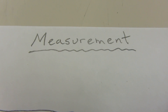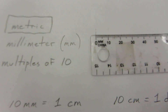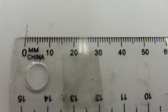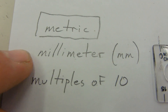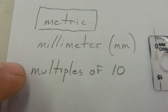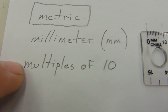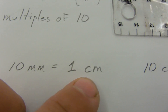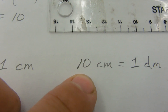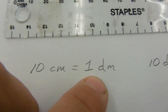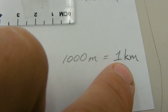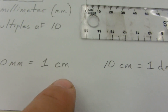This video is on measurement. I'm going to start with metric measurement because that is what you are probably most used to. On a metric ruler, we have millimeters as our base unit and multiples of 10. So 10 millimeters equals 1 centimeter, 10 centimeters gives us 1 decimeter, 10 decimeters gives 1 meter, and 1,000 meters is 1 kilometer. It's all based on multiples of 10.